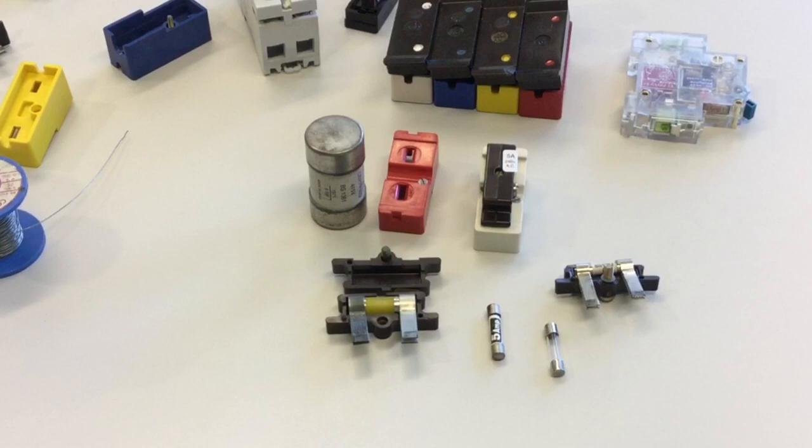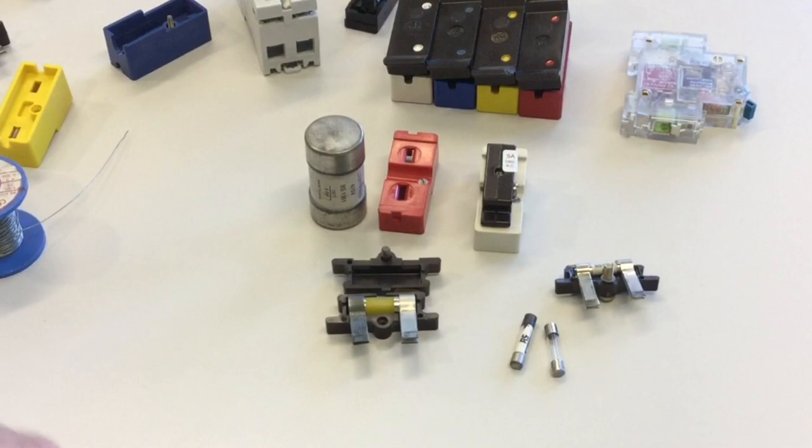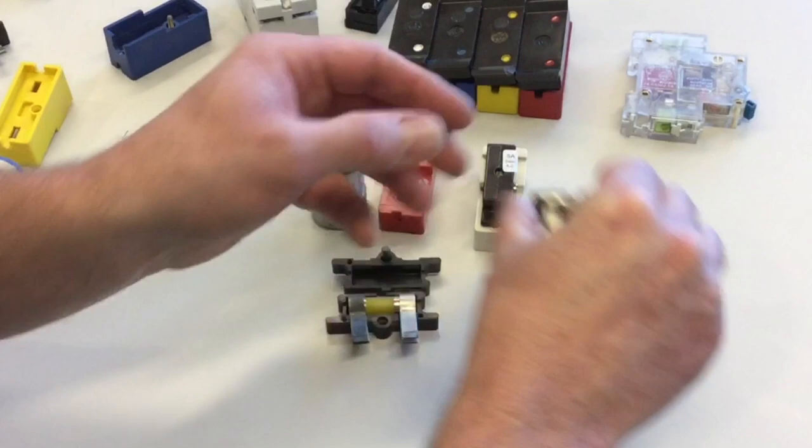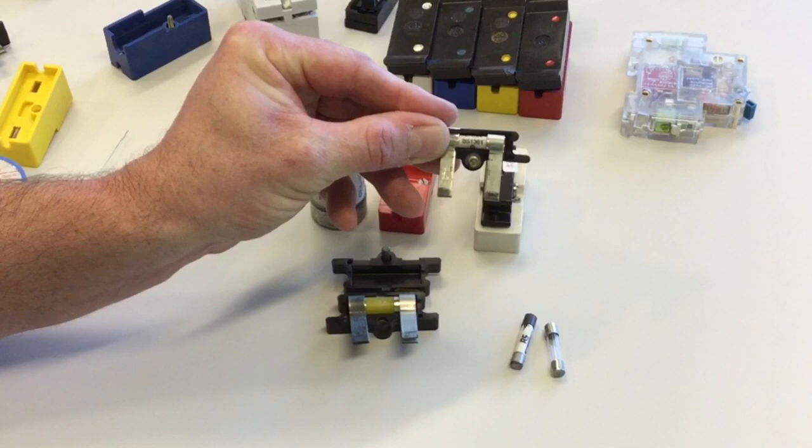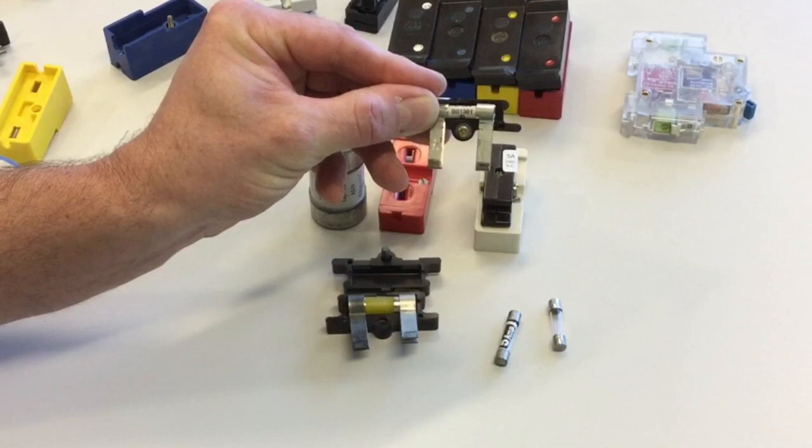Going on to look at the BS1361 cartridge fuse. Physically looks very similar to the BS1362 plug top fuse, so not to get confused with the two. We've got the same color carrier bases. When we physically open up a 5 amp BS1361 fuse, you can see it almost looks like a plug top fuse in construction. Same design, two metal end caps, a ceramic or glass body. And the fuse wire element is encased between the end caps.